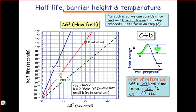As a point of reference for you, a delta G double dagger of about 20 kilocalories per mole at 20 degrees C corresponds to a reaction half-life of about 20 seconds, meaning that we're about halfway to the establishment of equilibrium after about 20 seconds.